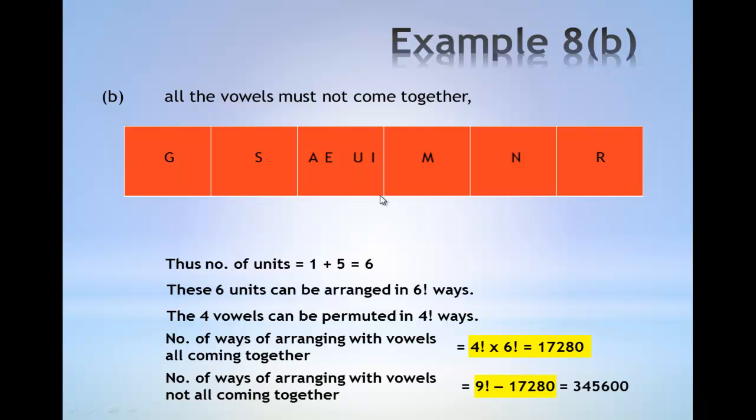The number of ways of arranging the vowels not all coming together is given by nine factorial minus the number of ways of arranging with vowels all coming together. This gives 345,600.